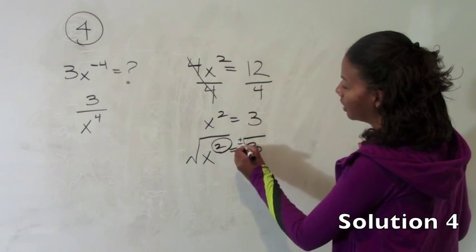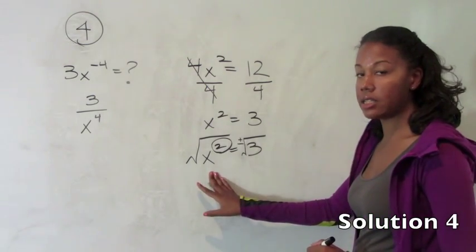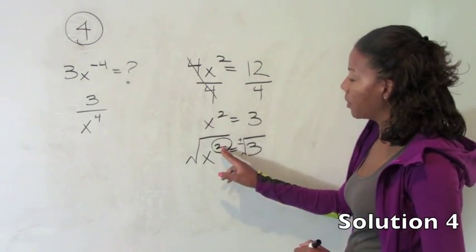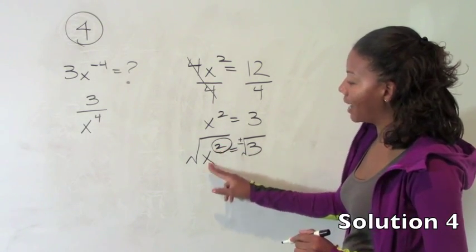When you take square roots, don't forget to make the right side plus or minus because we don't know what the underlying value of x is. Once you square a number, the original number could have been negative.